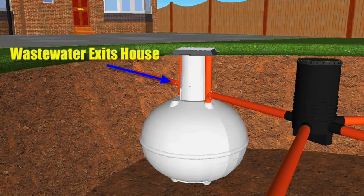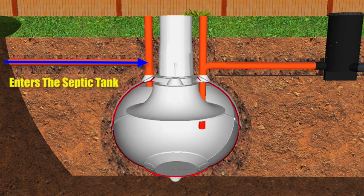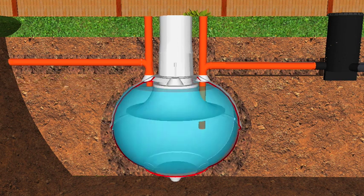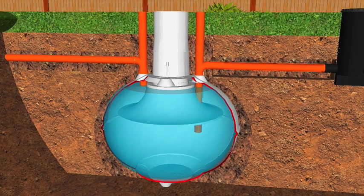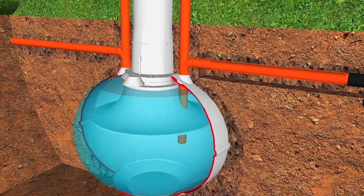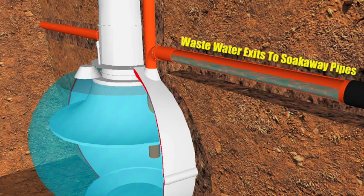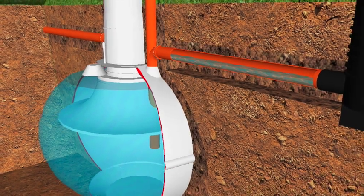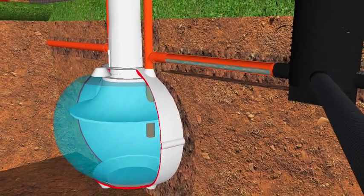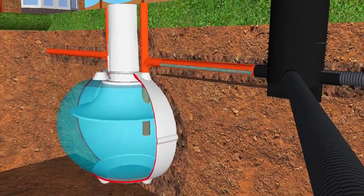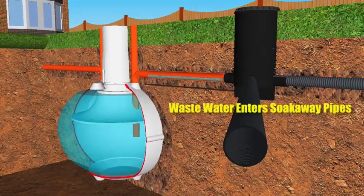The wastewater leaves the house and then enters into the septic tank. From there the wastewater makes its way up through the outlet pipe of the septic tank and then towards the pipes that lead to the soak away. From there the wastewater makes its way down the pipes into the soak away pipes and then drains naturally into the soil.